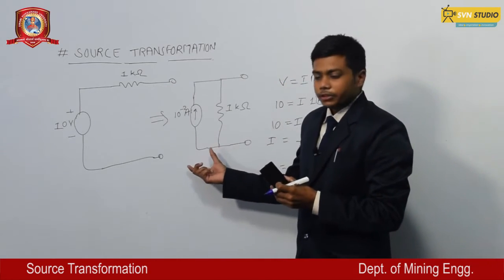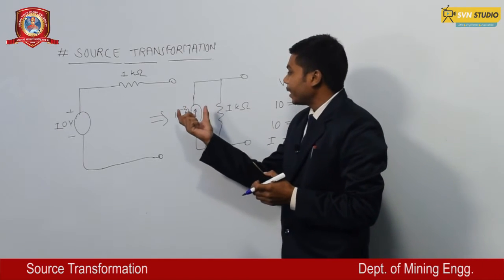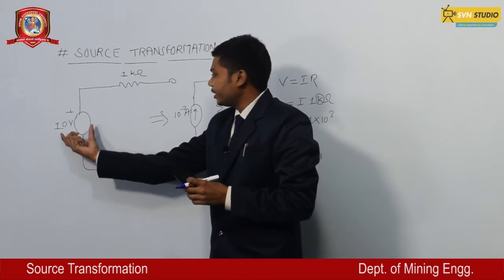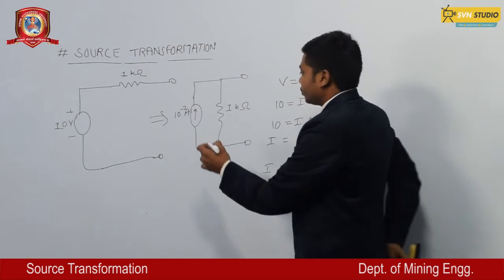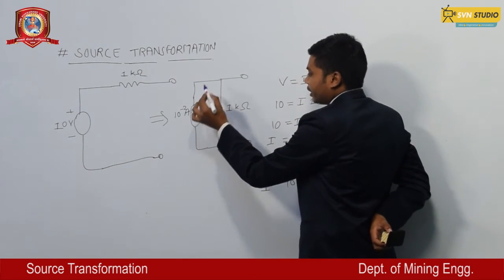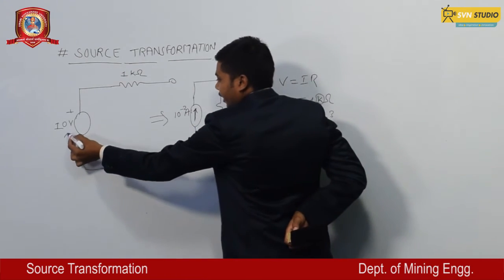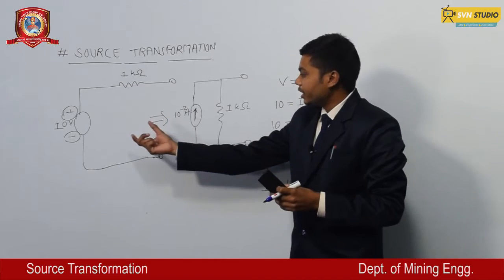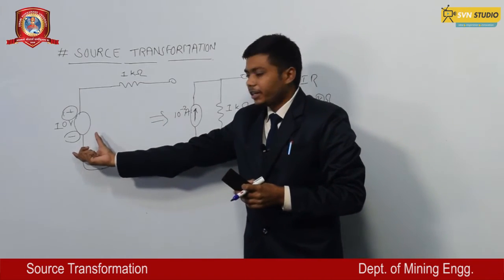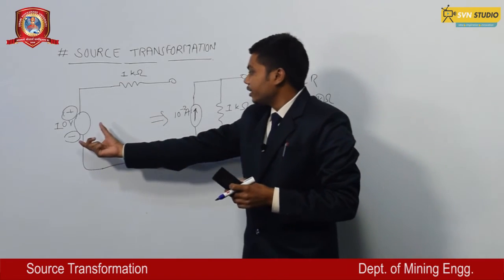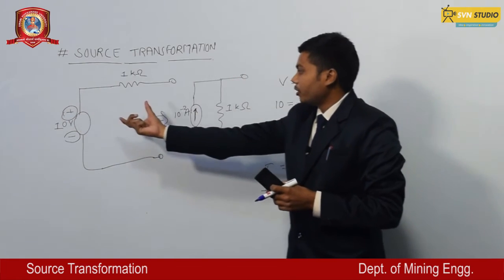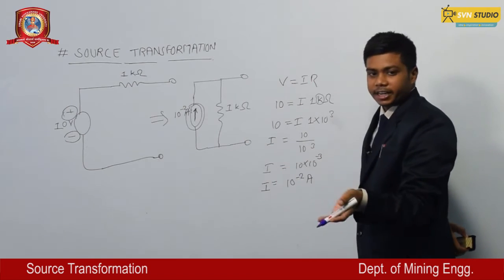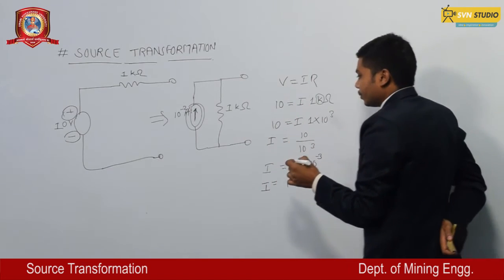What we should keep in mind is that the direction of current is always from negative to positive. This arrow is showing the direction of current — it is negative to positive. Because the negative terminal of the battery emits electrons and the positive terminal attracts them. That is the reason the direction of current is from negative to positive.